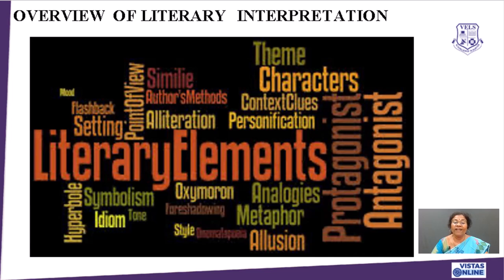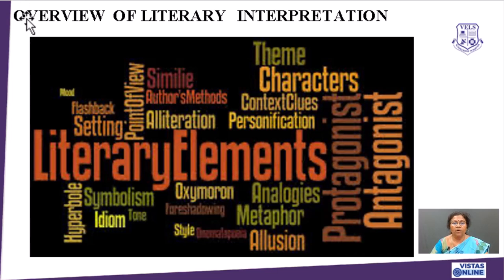So these are the terminologies which are used in all the genres of literature. For example, symbolism can be used in both poetry, prose, and novel. Idioms are used in poetry, prose, and novel. Flashback is used in novel. Setting is used in novel and drama. Alliteration is used in poetry. Author methods are used in almost all genres. Protagonist and antagonist are used in drama as well as novel. Then you have context and characters — without characters there is no piece of work. Characters can be human or non-human. Then theme, personification. So all those things are called literary elements. This is the purpose of why we read about literary elements.